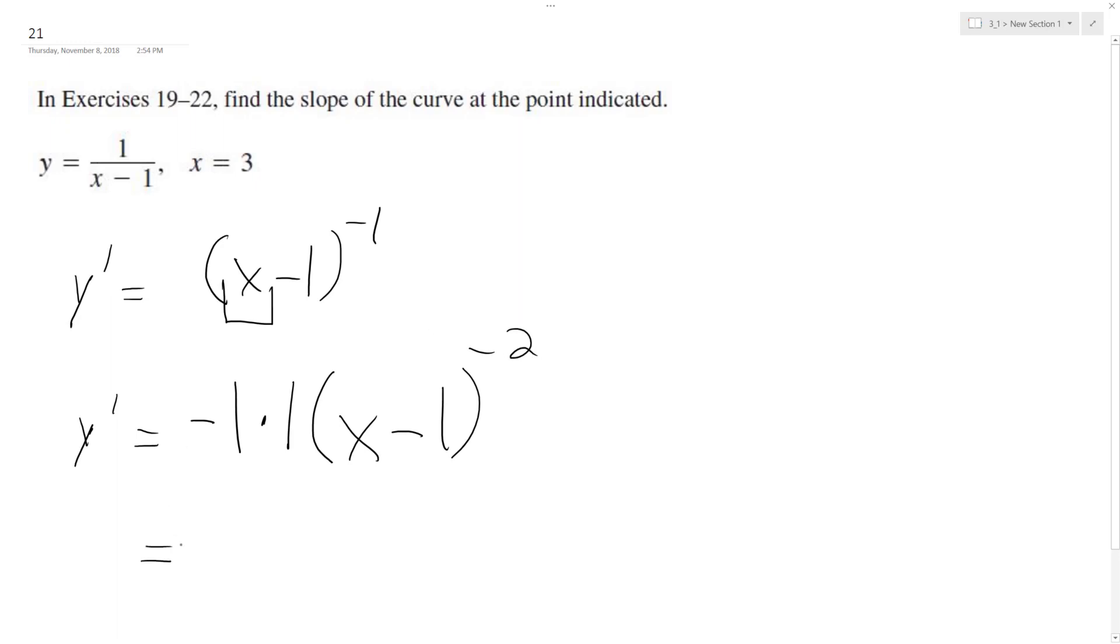So this is the same thing as negative 1 over (x - 1) squared. At x equals 3, y prime of 3 equals negative 1 over (3 - 1) squared. I just brought the exponent down.